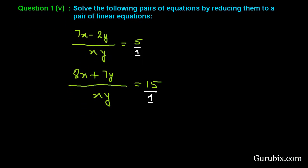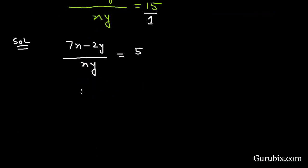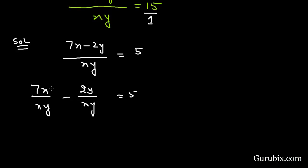Let us consider the first equation: 7x minus 2y over xy equals 5. If we expand this equation, we have 7x over xy minus 2y over xy equals 5. We can cancel x with x and y with y, giving us 7 over y minus 2 over x equals 5.